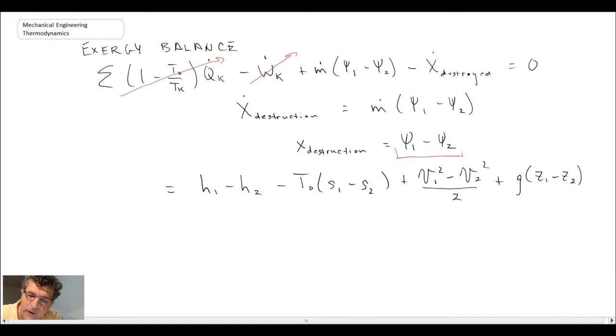Now here we can cancel out our potential energy term because the nozzle is not moving vertically in any way. We have to keep the velocities because they are there. So what I'm going to do now is plug in the values that we extracted when we looked at the steam tables at the very beginning of the problem.